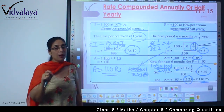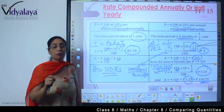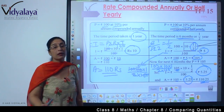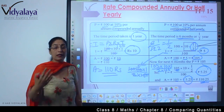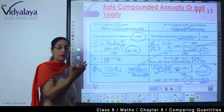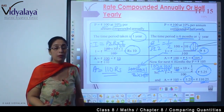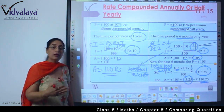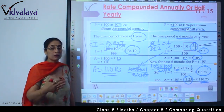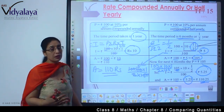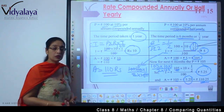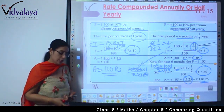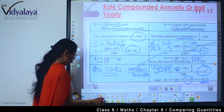This is a 25 paise difference when we are taking a simple amount of ₹100. Now think about it — if we put thousands and lakhs at compound interest, how much difference can we come across? This makes it clear why compound interest matters and how we do the calculation.